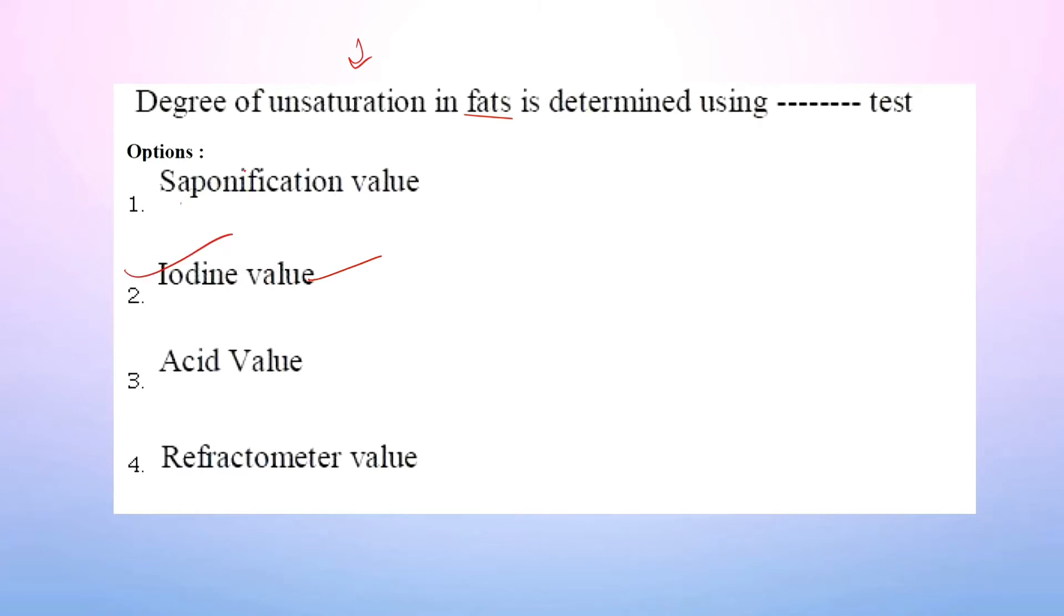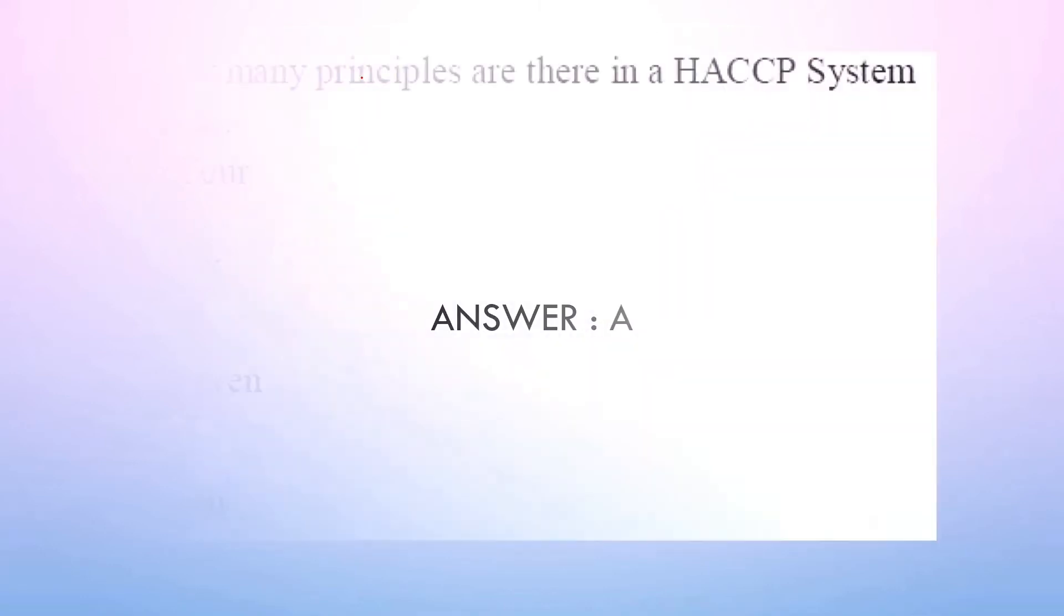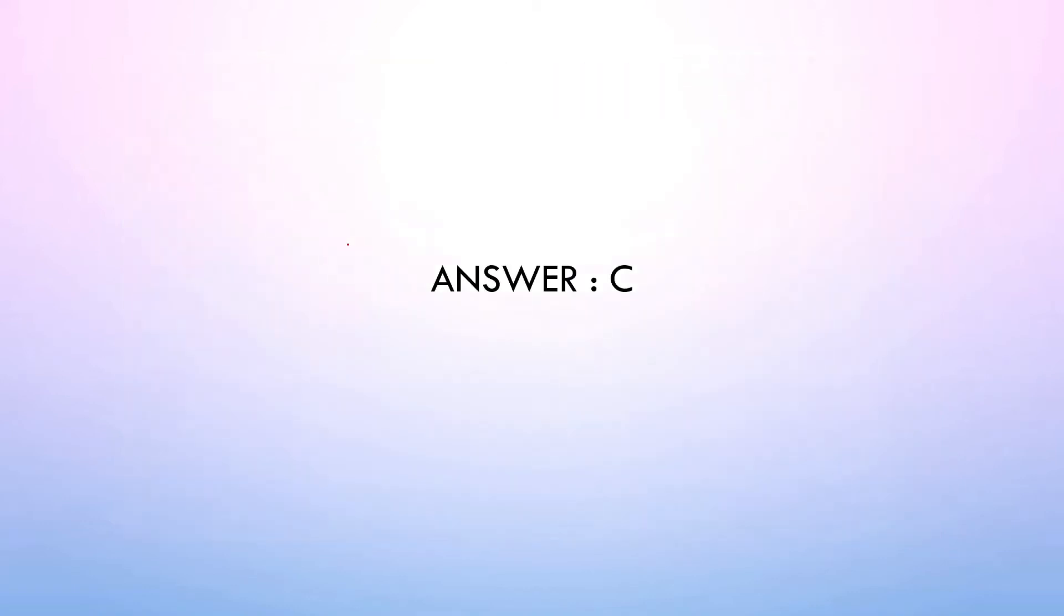FSSAI is operational from: 2011, 1954, 1993, 1980. Another memory-based question. The correct option is 2011, that is option A. Next, how many principles are there in HACCP system? Four, six, seven, ten. Another memory-based question. Seven principles in the HACCP system.